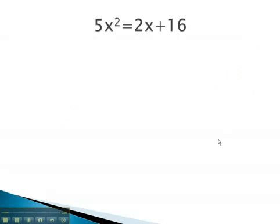For example, if we had this problem, we would want to first make it equal zero before we tried any factoring. The x squared is already positive, so let's move everything over to the side with the positive x squared. We do this by subtracting 2x and subtracting 16.